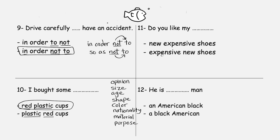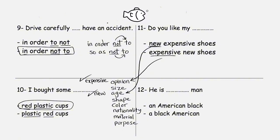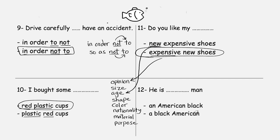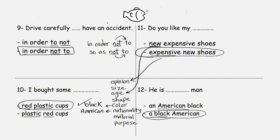'Do you like my new expensive shoes' or 'expensive new shoes'? When you say something is 'new,' you're talking about age; 'expensive' is your opinion. So opinion comes first — the answer is 'expensive new shoes.' And: 'He is an American black man' or 'a black American man'? 'American' is nationality, 'black' is color — color comes before nationality. So the correct answer is 'a black American man.' Thank you for watching.